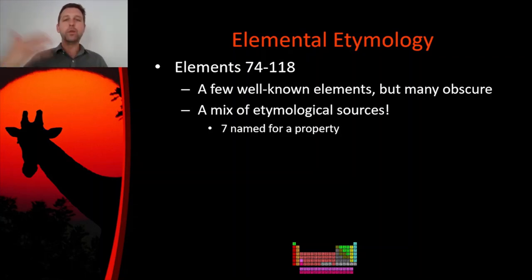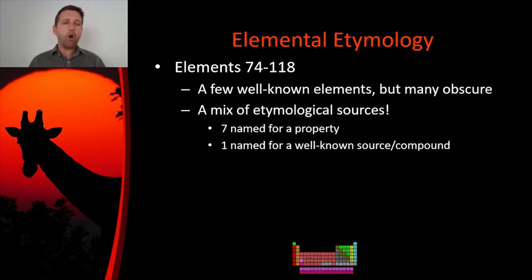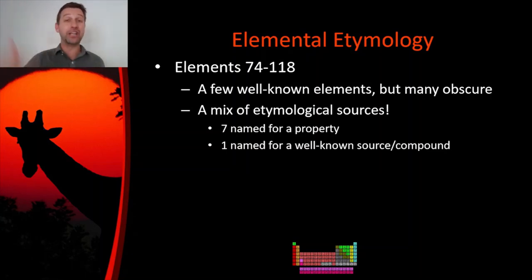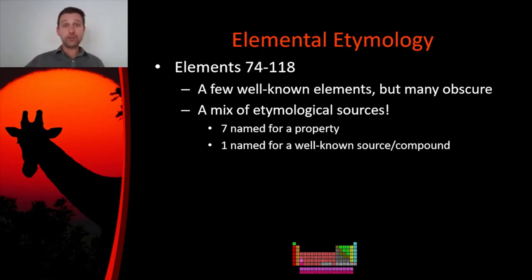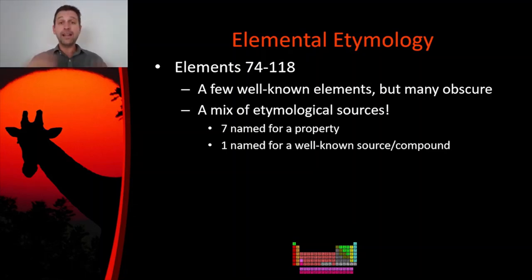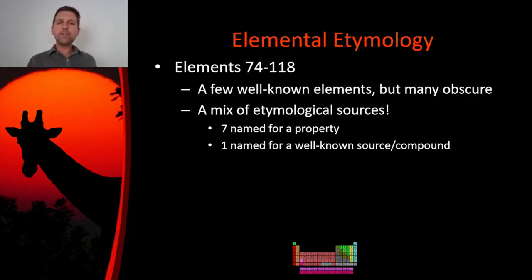There is a mix of etymological sources in these final 45 elements of the periodic table, which is not abnormal. As we've seen, there's a mix of sources going all the way back to the first episode when we looked at the first 25 elements. However, that mix is going to be changing as we progress through the periodic table. Seven of these are named for some kind of property that they have. Only one is named for a well-known source or compound. In the previous two episodes, these two sources were by far the most common, and as you can see, they've really gone downhill here in these final 45 elements.